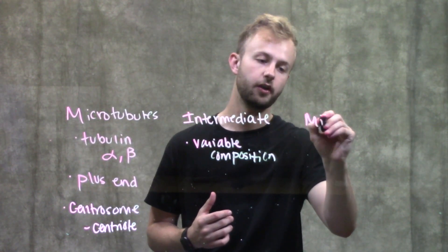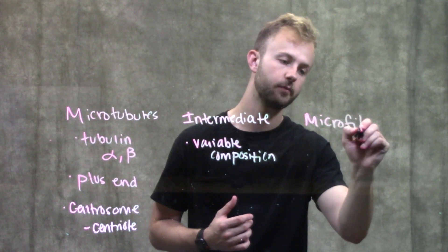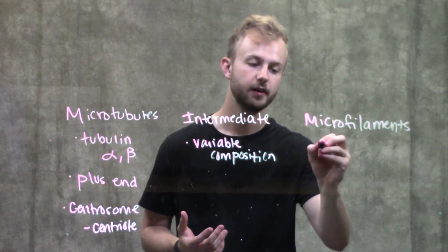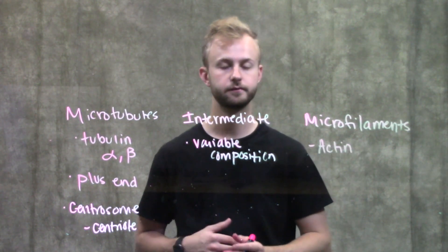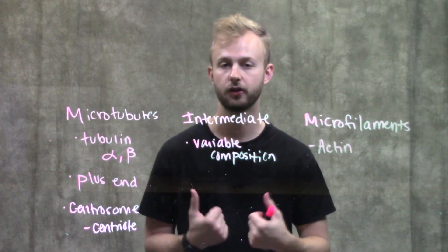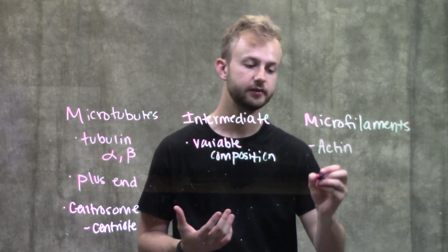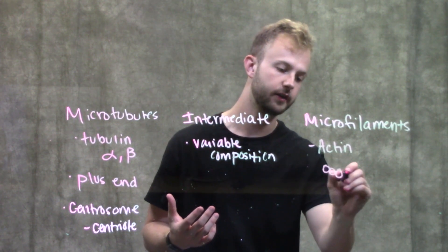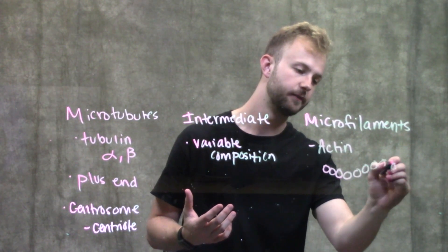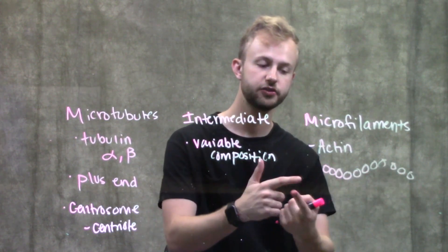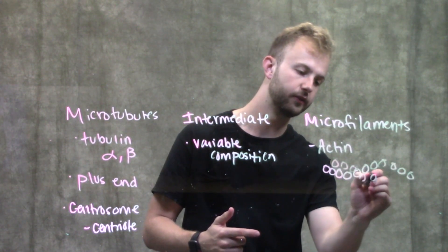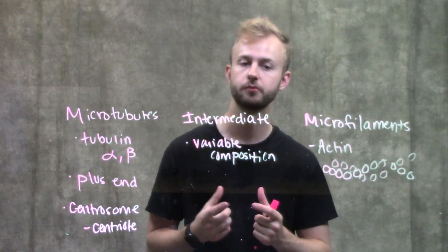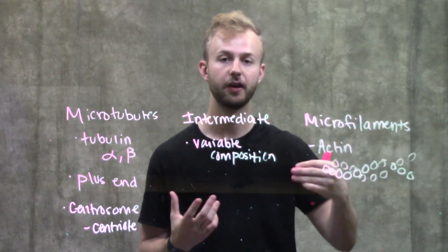The last filament type is microfilaments, which are made up of actin — a globular protein. Actin arranges itself into chains, and then two of these chains wrap around one another, making a spiral of actin monomers. That spiral structure makes up the microfilaments.